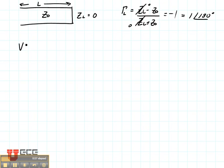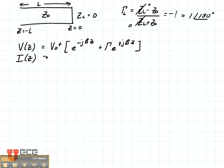Let's consider what the voltage looks like on this transmission line. We're considering the voltage as a function of Z. Z equals zero is here at the load and Z equals minus L is here at the input. The general expression for this is V zero plus times E to the minus J beta Z plus the reflection coefficient times E to the plus J beta Z. The current, the general equation for the current, is V zero plus divided by Z zero times E to the minus J beta Z minus the reflection coefficient times E to the plus J beta Z.